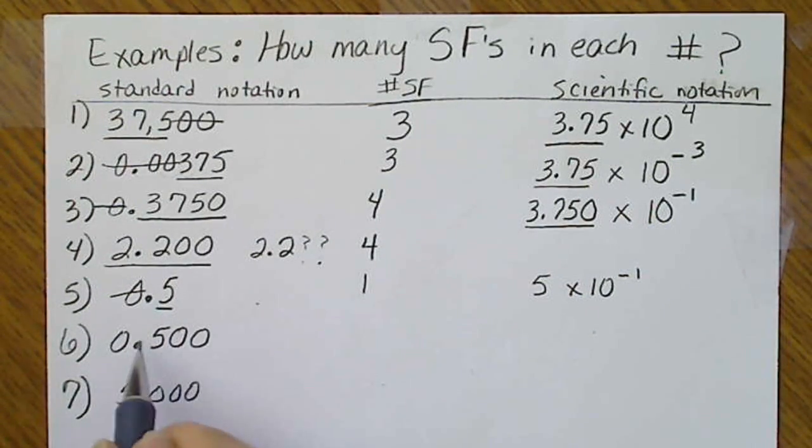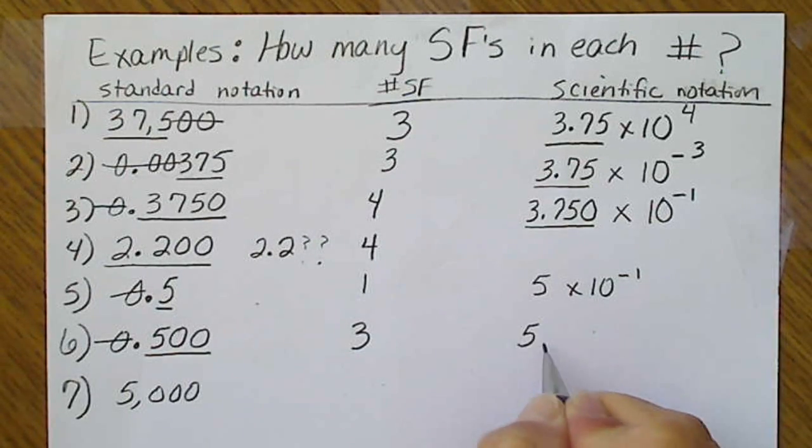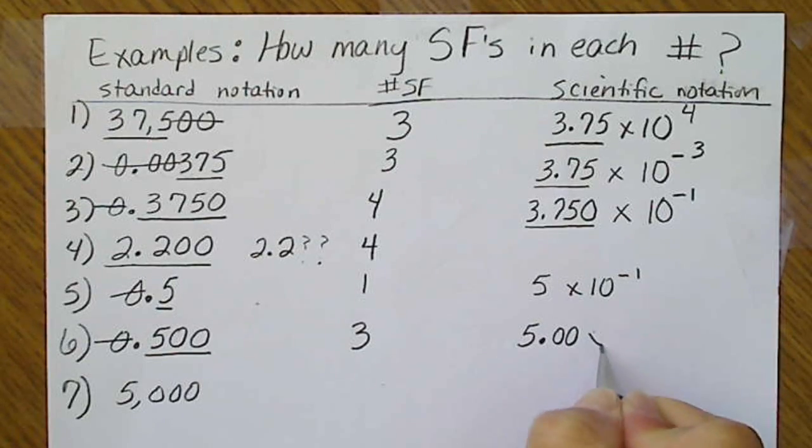0.500, again, cross out all the zeros at the beginning. All three of those values are significant, and so three significant figures. This would be 5.00 times 10 to the negative 1.